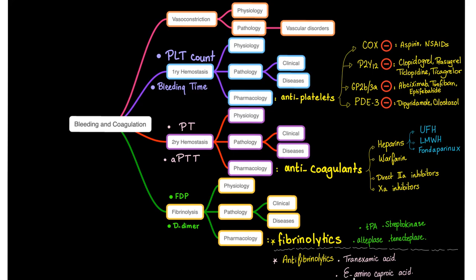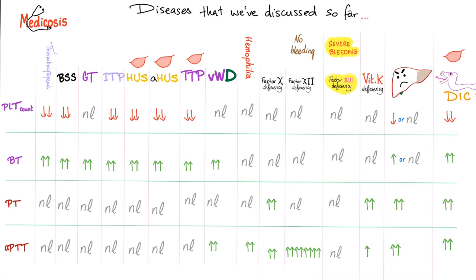If you want to master bleeding and coagulation disorders, this table should be your friend. Here is the disease, and here you have platelet count, bleeding time, PT, and PTT. You can also add D-dimer and fibrin degradation products, then go through each disease. You can do the same thing for medications — for example, put aspirin and see what happens to platelet count, bleeding time, PT, or PTT. Do the same with warfarin, heparin, etc.